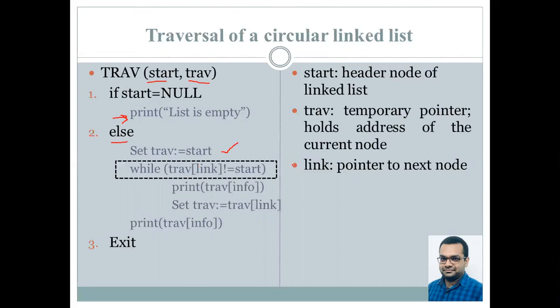Now we check till the time traversal's link is not equal to start, that is we haven't reached the last node. So till that time we keep on printing the traversal's information part and incrementing the traversal's value to point to the next node. And when you exit from this value upon reaching the last node, you simply print out the value of the information field of the last node and your program exits.